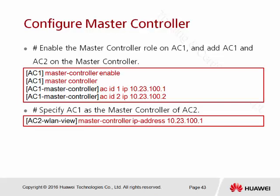You have to tell the AC who is the master controller. Right now I want to use AC one as the master controller, so I need to go back to the system view and use the command 'master controller enable'. Then I type the command 'master controller' here, because right now I want to do some configuration inside the master controller view. The first command we use is 'enable', to make AC one become the master controller.